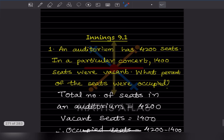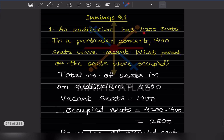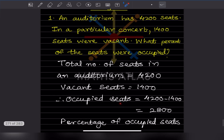An auditorium has 4,200 seats, and in a particular concert 1,400 seats were vacant. What percentage of the seats were occupied? Total seats = 4,200, vacant seats = 1,400, so occupied seats = 4,200 − 1,400 = 2,800.